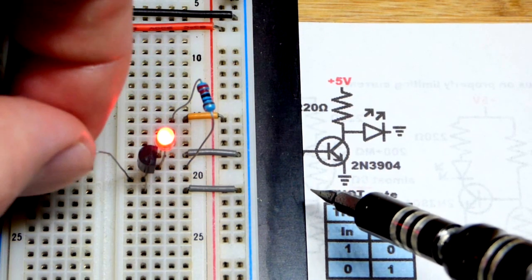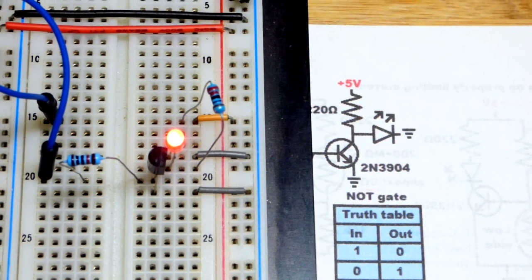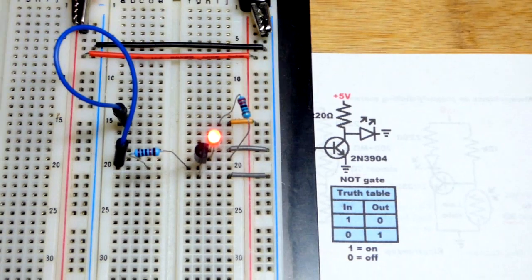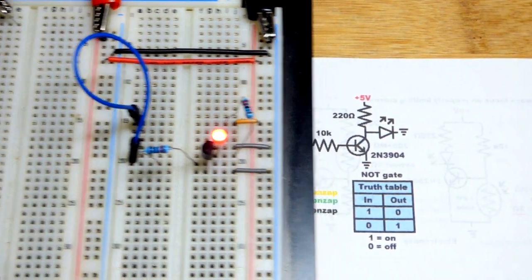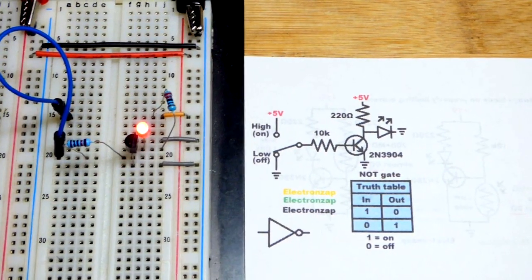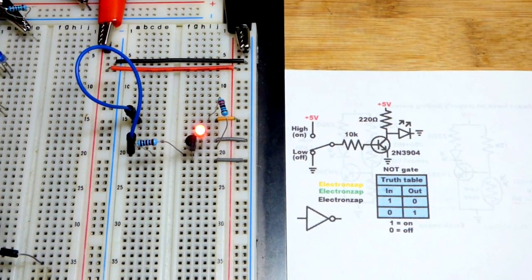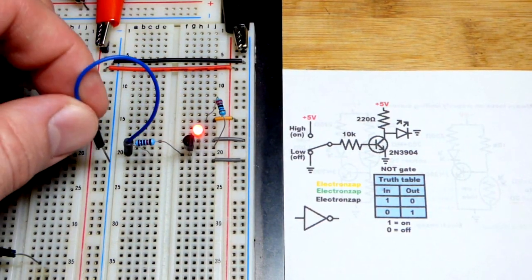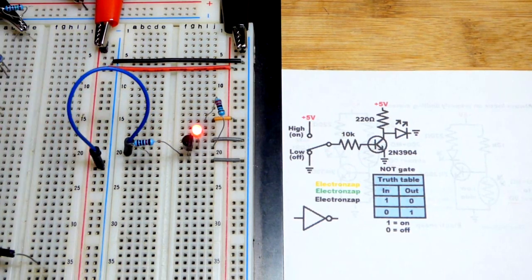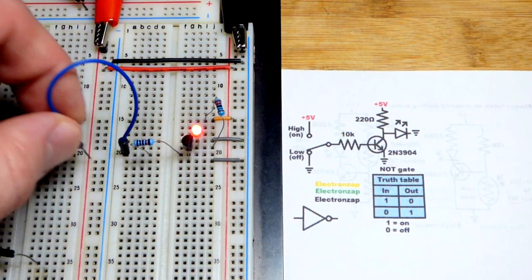The middle pin, the base, has the resistor, and it's just floating right now. You don't absolutely have to connect it to the negative rail, but that's the best way to make sure it stays off. We've got a low right there—it's off. Now we'll go high.